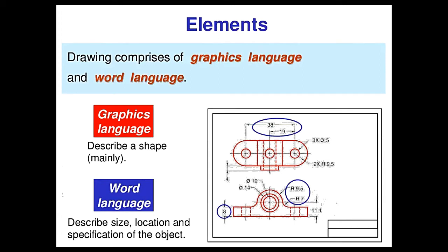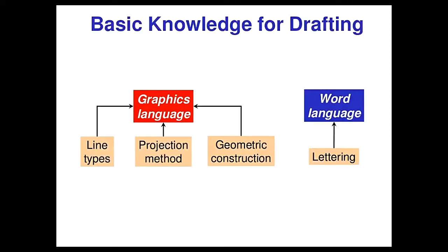Elements of Graphics: a drawing comprises both graphic language and word language. Graphic language describes the shape, location, and specifications of an object. Basic knowledge for graphics includes the use of line types, projection methods, and geometric construction.